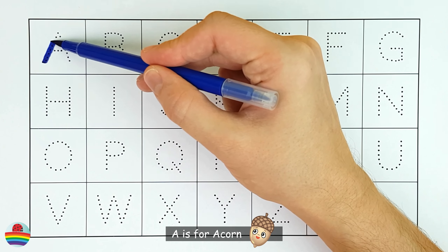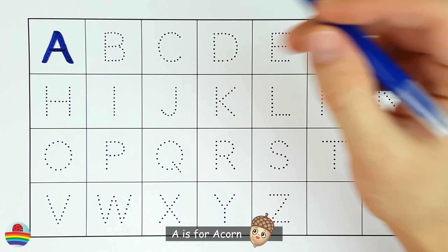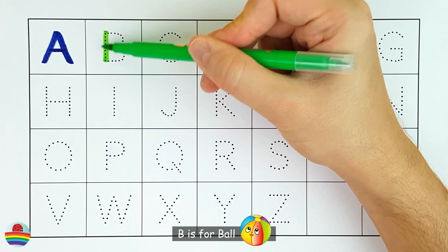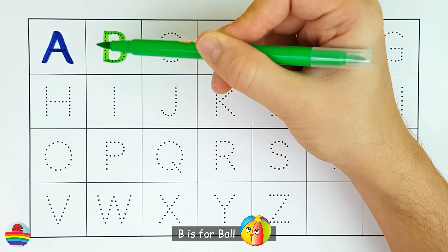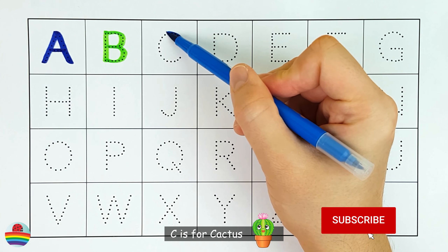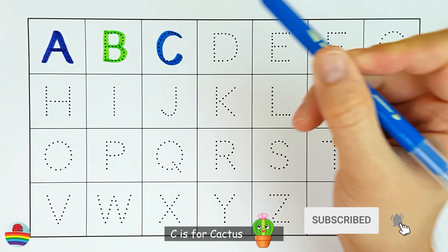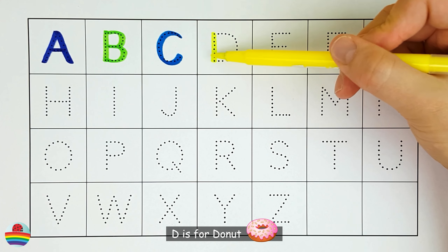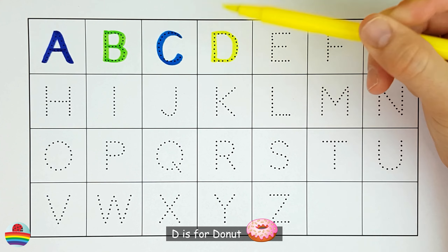A. A is for acorn. A. B. B is for ball. B. C. C is for cactus. C. D. D is for donut. D.